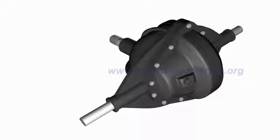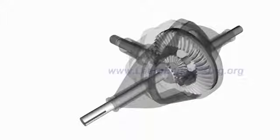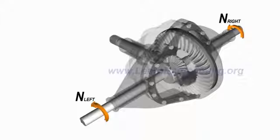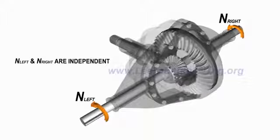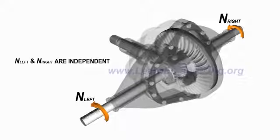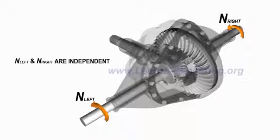The ingenious mechanism in a differential allows left and right wheels to turn at different RPM while transferring power to both wheels. We will learn how differential achieves this in a step-by-step manner using its simplest configuration.